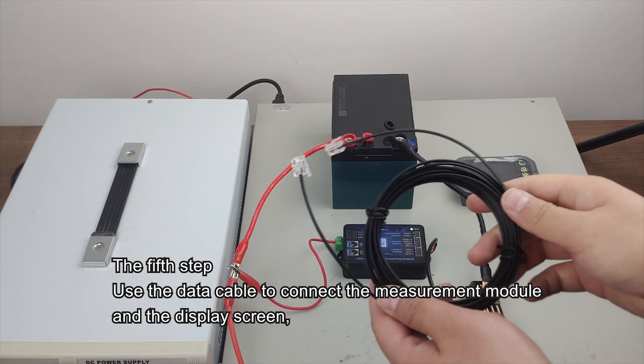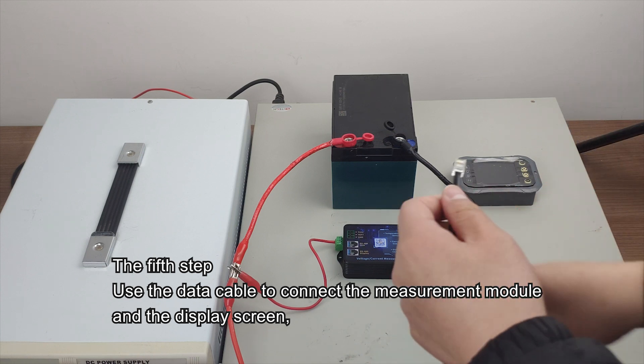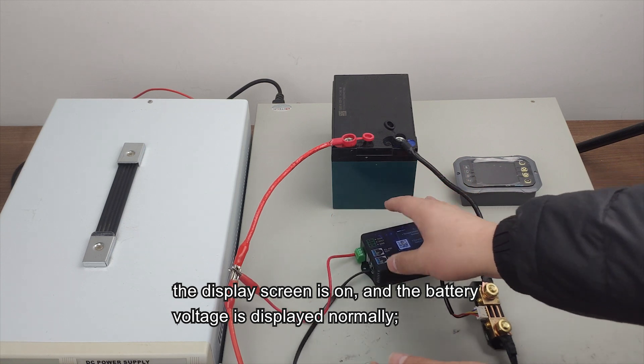The fifth step. Use the data cable to connect the measurement module in the display screen. The display screen is on and the battery voltage is displayed normally.